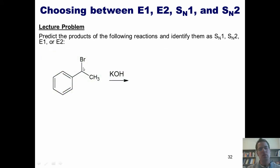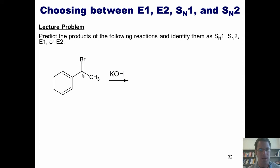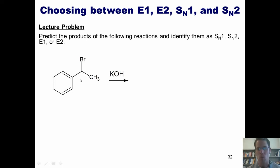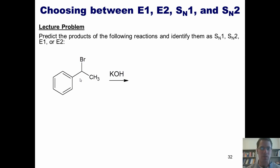You'll notice that if this bromide leaves, giving me a carbocation at that position, not only is it a secondary carbocation, but it's a stabilized secondary carbocation because it's at the benzyl position, meaning it can resonance delocalize through this ring. Thus, by asking question number one, I have determined that it is indeed stabilized, which means it could be any of the above reactions: SN1, SN2, E1, or E2.